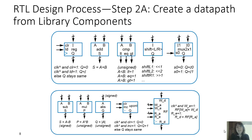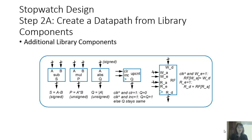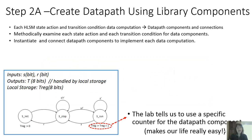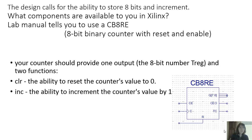Take a look at the library components that are available to us in the book. We see that there are quite a few, and we've gone over these in class, but we know that when we take a look at our lab, our lab has us use a specific counter that's actually given to us. And so rather than just using Treg, we're going to use a counter. If we take a look at that counter, we know that it's a CB8RE, which is an eight bit binary counter that has reset and enable capabilities.